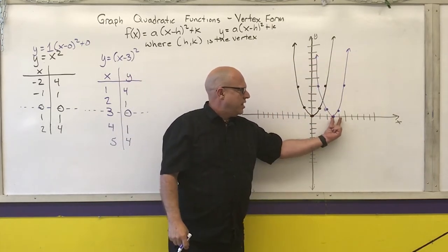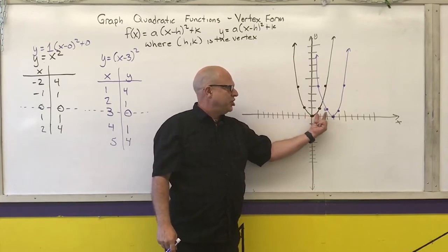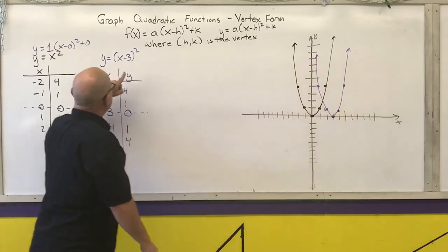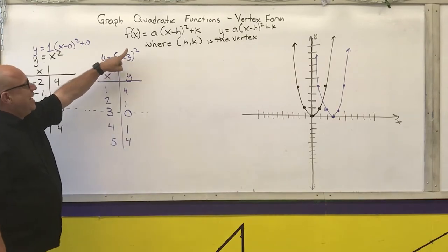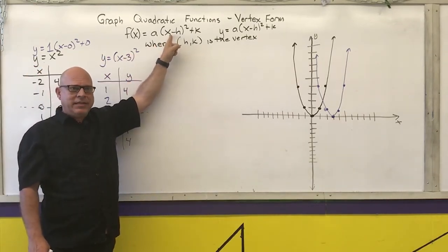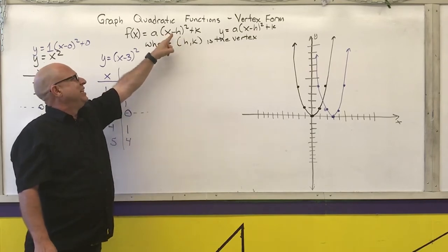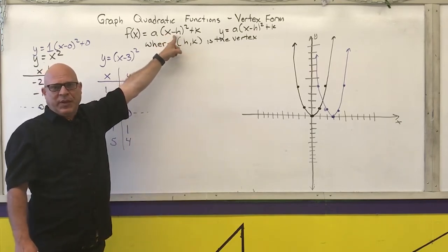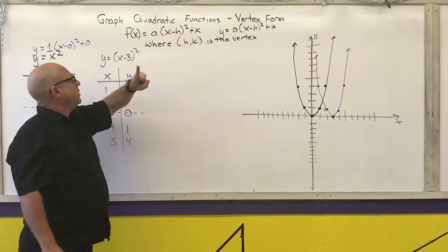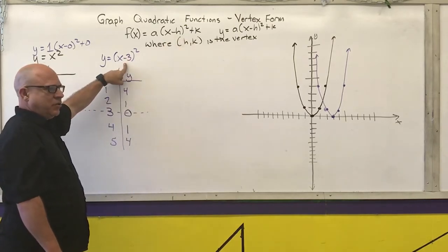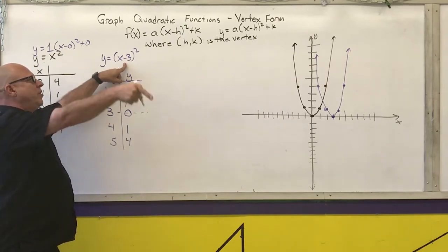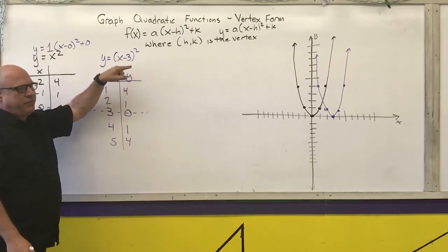If you look at the purple graph, all it is is the black graph shifted to the right 3. The number inside the parentheses tells us how far we are shifting left or right, and it's in the opposite direction you would expect. I subtracted 3, so subtracting would normally mean left, but the opposite means go to the right. So this says shift to the right 3.